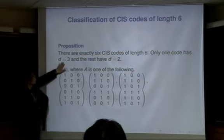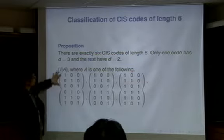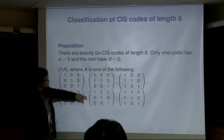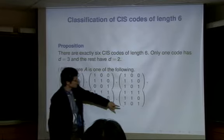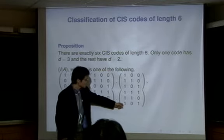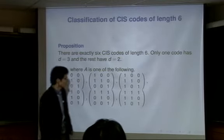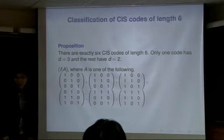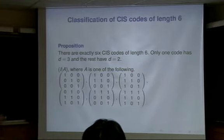We want D as large as possible. When the total length is 6, only one code has D equals 3. So this is the most interesting code for our purpose.